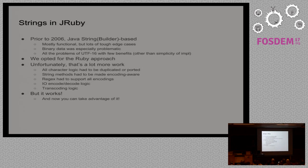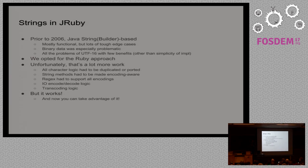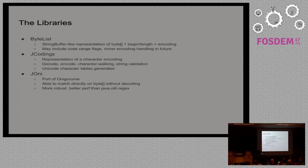So strings in JRuby. Prior to 2006, we had a Java String-based or character-based implementation. But all these different encodings were a problem, and representing binary data was a problem. We realized we had to follow the Ruby approach more closely. Unfortunately that meant a lot more work, and up until maybe even last year we were still working out bugs in our implementation of multilingualization. Character logic had to be duplicated, the regular expression engine had to be ported, all the IO encoding and transcoding logic had to be ported. Years of work — but it works now. We have very few or no known bugs compared to CRuby in our encoding and regular expression libraries, and they're just Java libraries you can use.